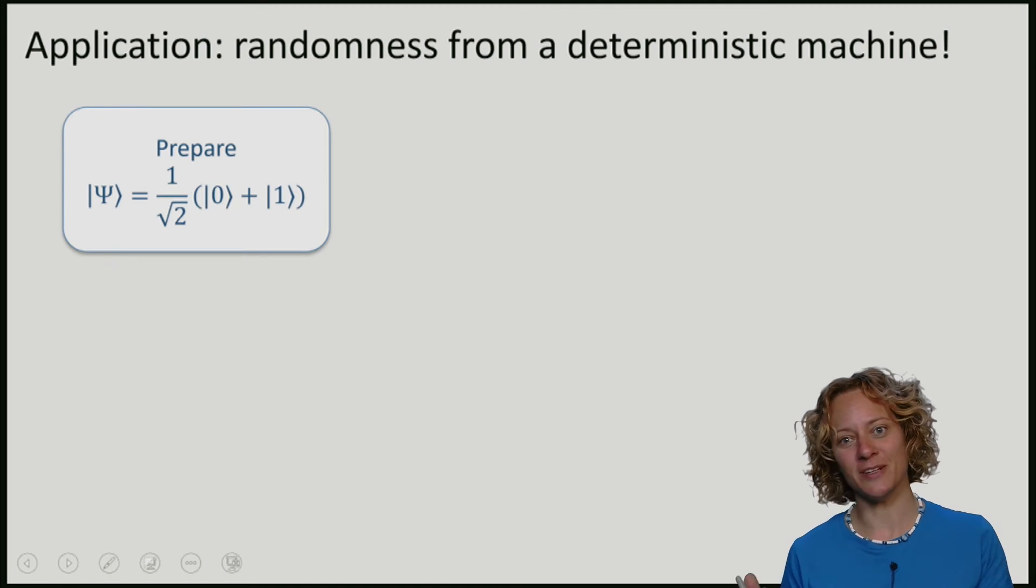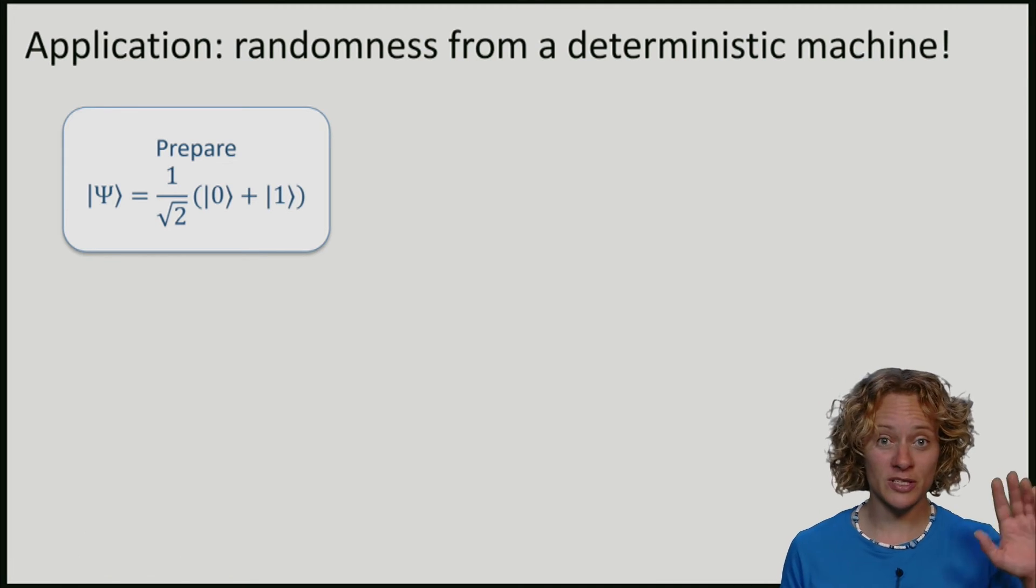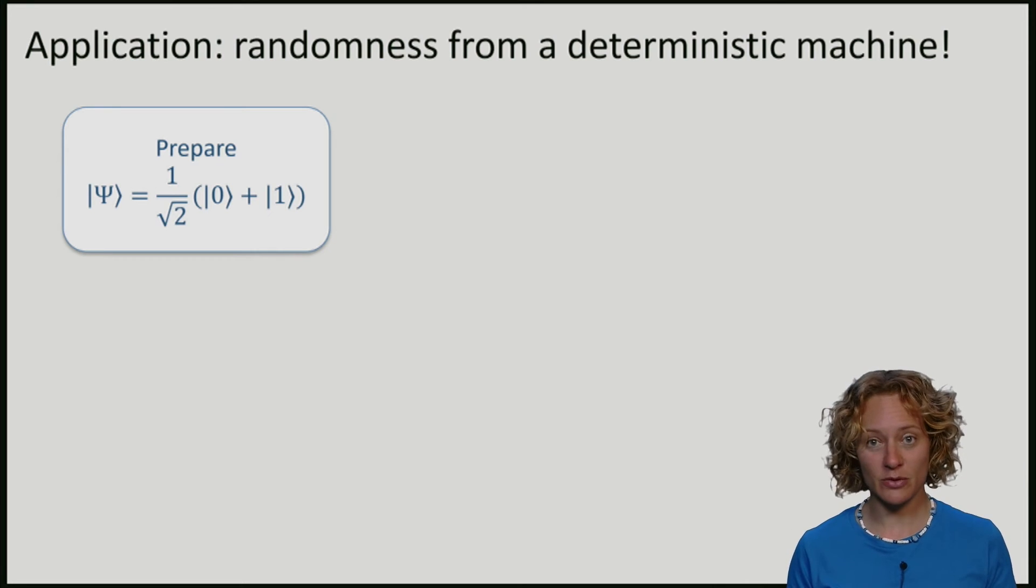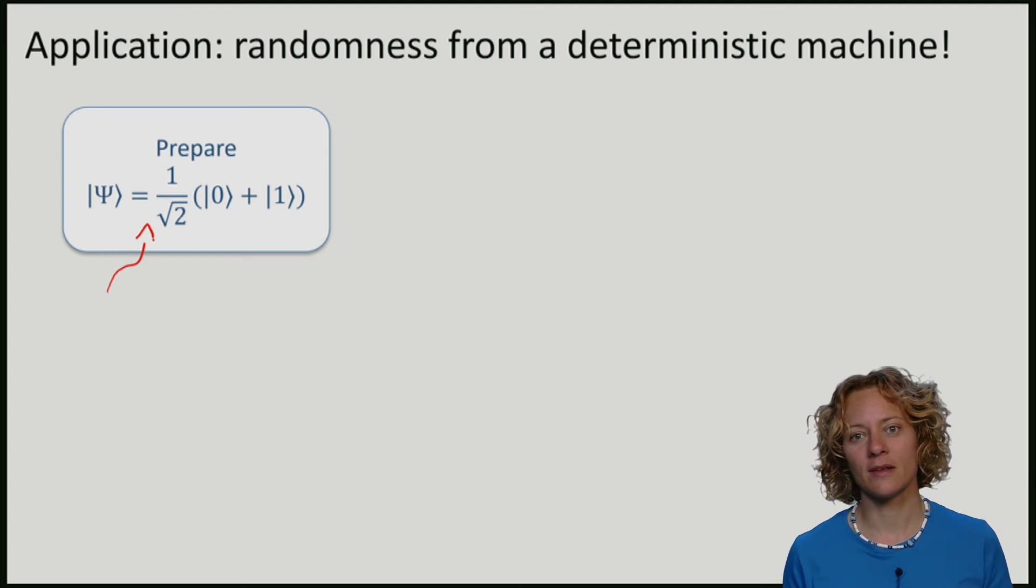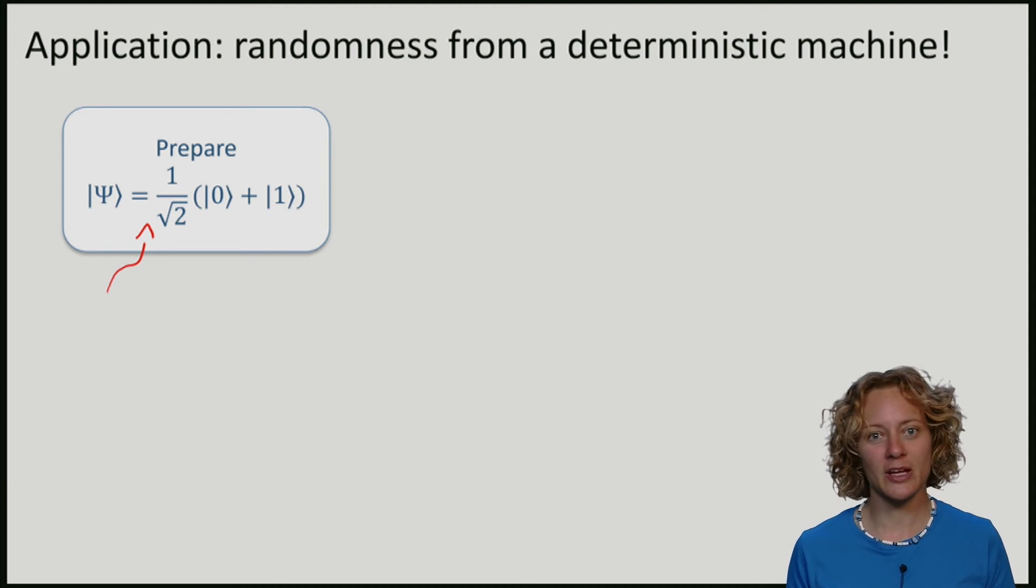Imagine that we built a machine and if we push the button, the machine will prepare this state. Let's remember what this is. It is an equal superposition between 0 and 1.